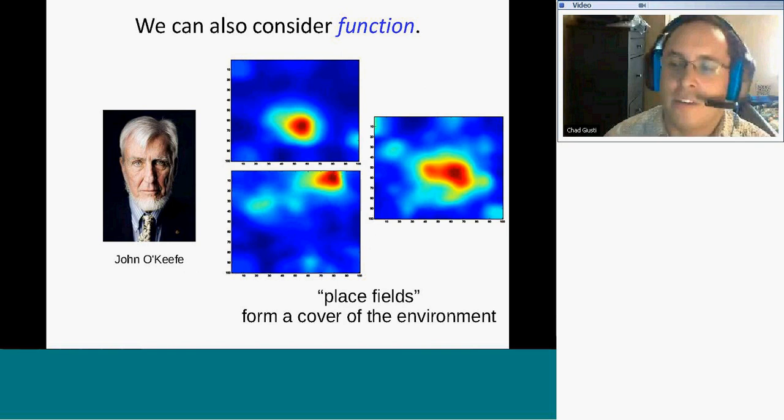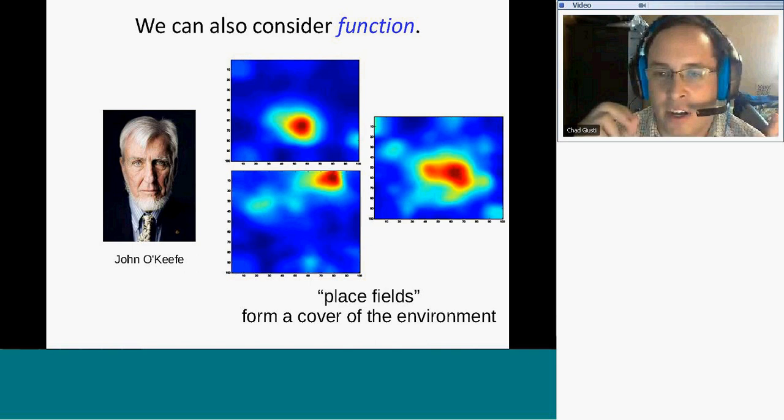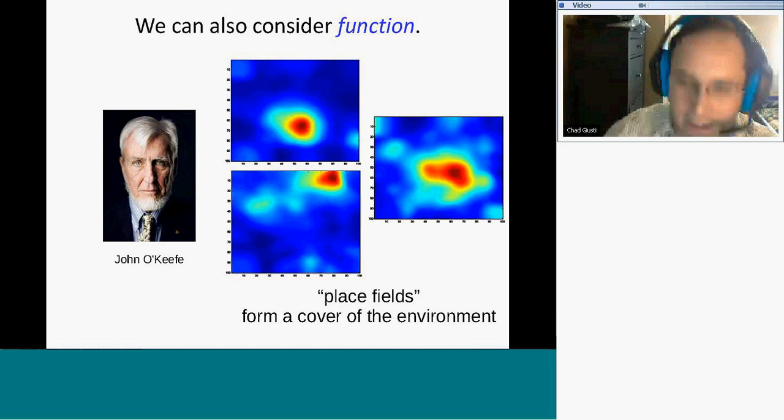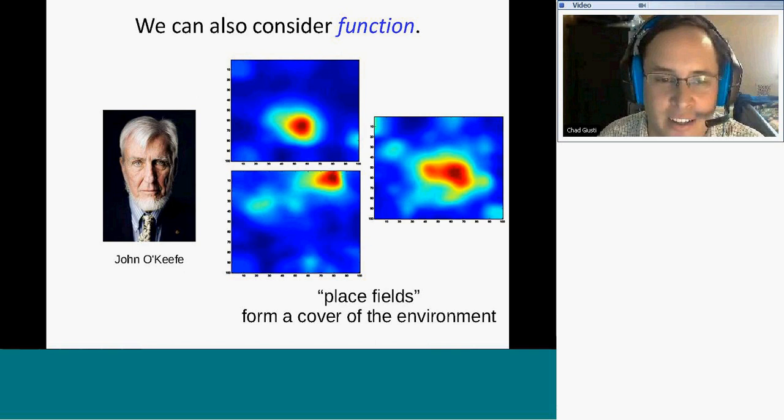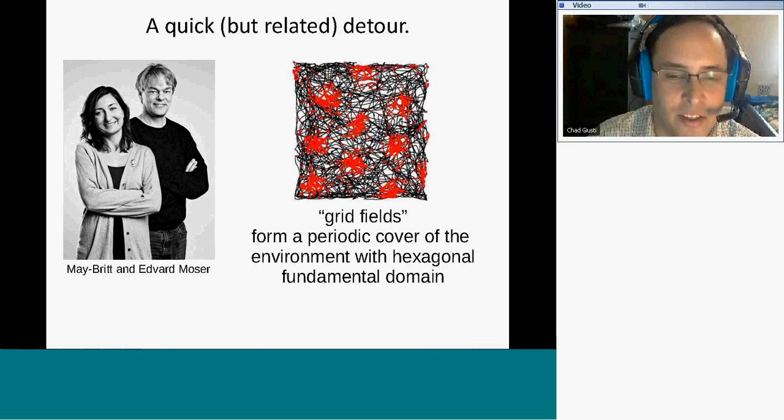It's a pretty fantastic discovery. It won him and some other people the Nobel Prize in medicine last year. It's this very simple cell that has no direct sensory inputs. And somehow it records where you are in an environment. These things are called place fields. You get a picture of what you call a receptive field. So there's some sort of space, and a neuron in every place cell in the hippocampus maps to a location in the space.